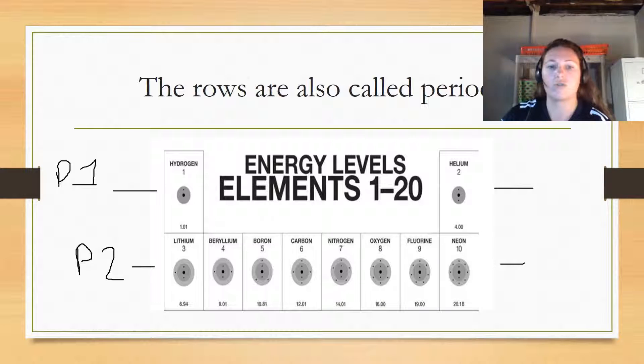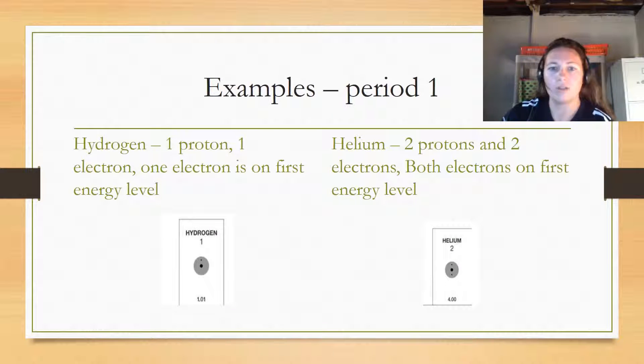Three electrons, four electrons, five electrons, and so forth. Here's an example: hydrogen has one proton and one electron in the first energy level. Helium has two protons and two electrons, also in the first energy level.